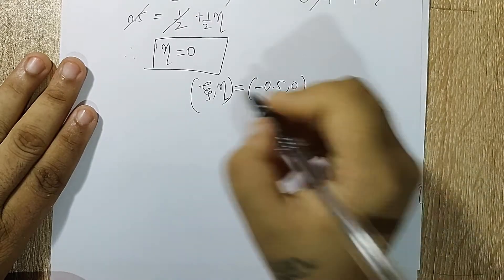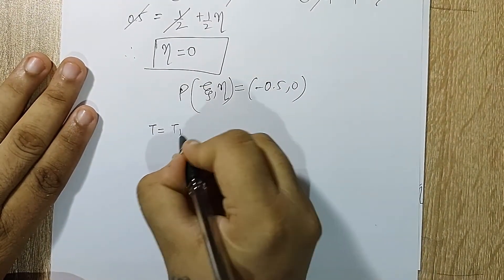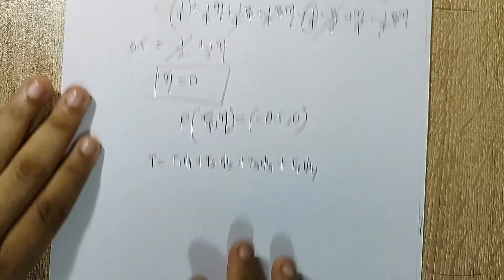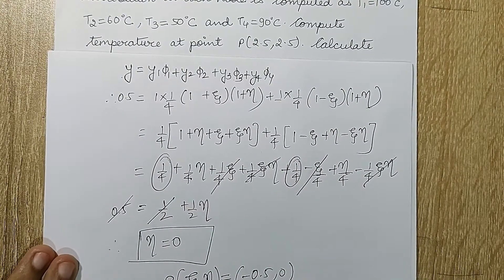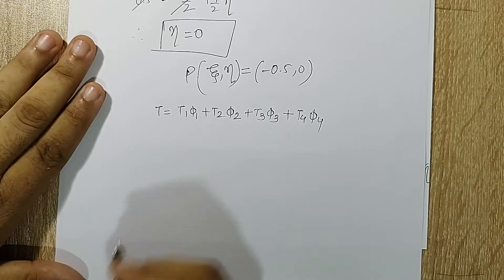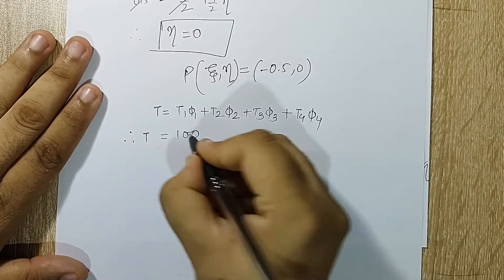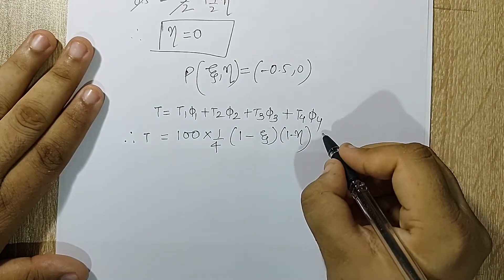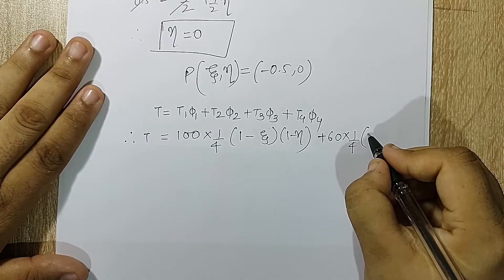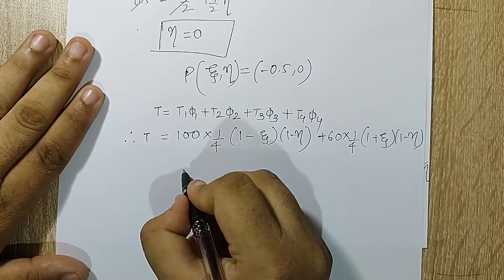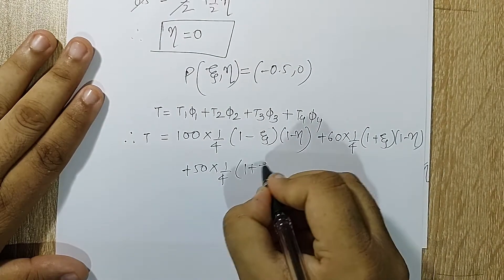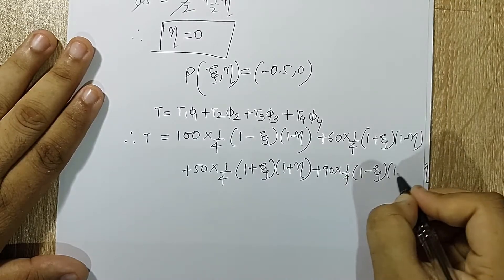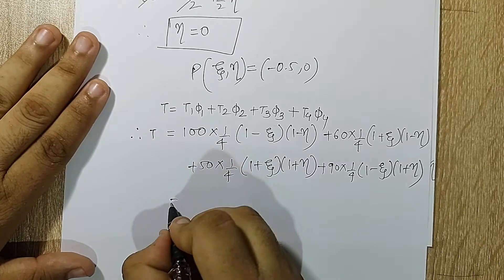Now I need to calculate the temperature at point P. The formula is T = T1·φ1 + T2·φ2 + T3·φ3 + T4·φ4. I know T1, T2, T3, T4 and also φ1, φ2, φ3, φ4, and the values of ζ and η. Substituting: T = 100·(1/4)(1−ζ)(1−η) + 60·(1/4)(1+ζ)(1−η) + 50·(1/4)(1+ζ)(1+η) + 90·(1/4)(1−ζ)(1+η).